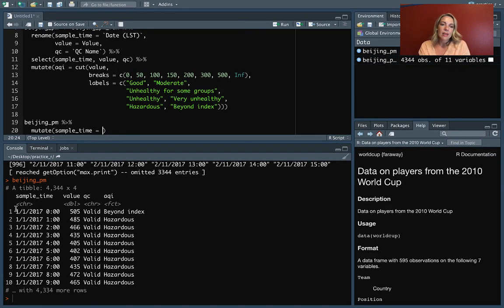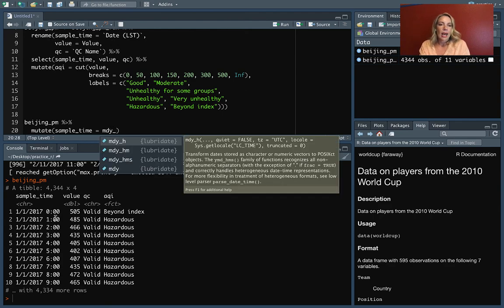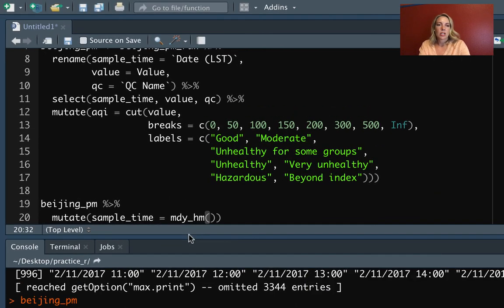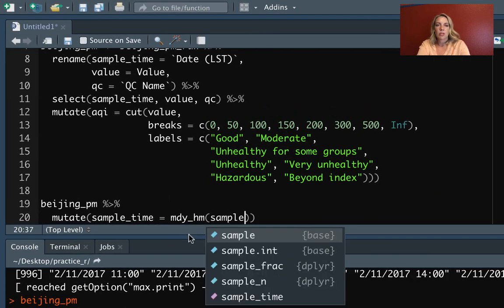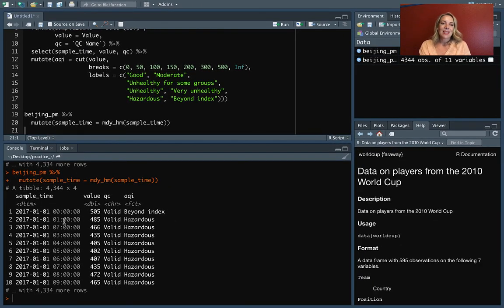In this case, again, we decided that we have month, day, year. So we'll do mdy and then we've got hour and minute here. So that's our function, and then we'll do that as a function of sample_time. So let's check. And that seems like that's worked. You can see you've got it in this special date time right here.